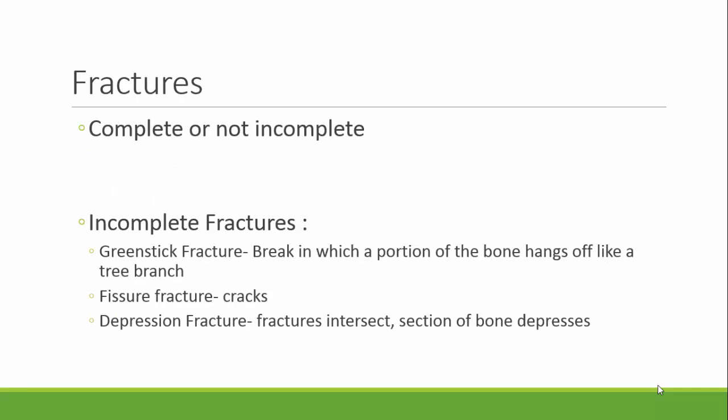Pathological fractures are either complete or incomplete. Examples of incomplete fractures are greenstick fractures, where the break results in a portion of the bone that hangs off and branches away from the native bone, kind of like a tree branch — hence greenstick. Fissure fractures are another type of incomplete fracture consisting of cracks that occur within the bone tissue. A depression fracture is when fractures may intersect and the section of bone may depress or proceed into itself or another bone.